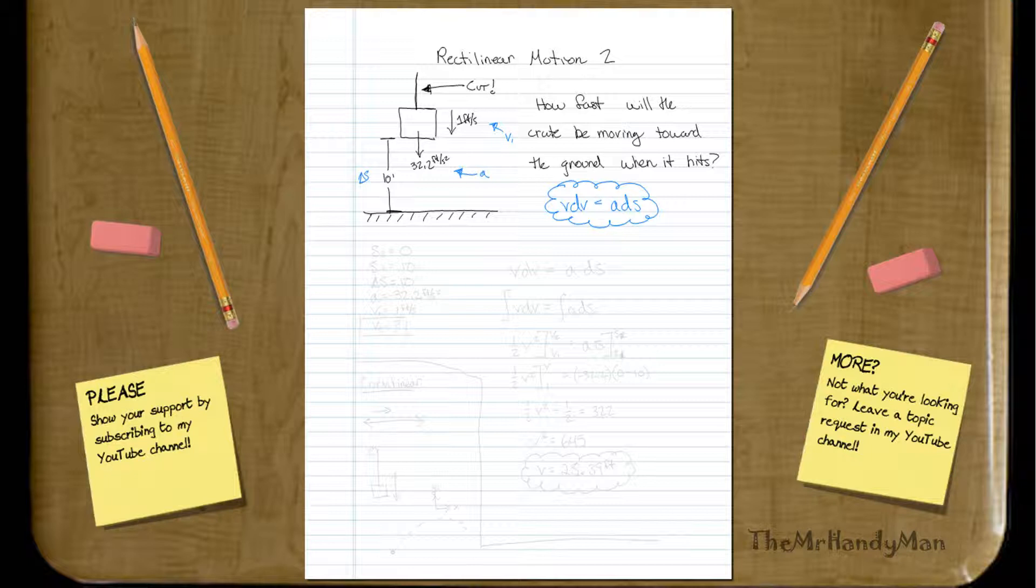So first of all, let's just calculate this out. We have s, what I'm going to call s1, or we could just call it delta s. It doesn't really matter. So we have s2 is equal to 10 feet or 0 feet, s1 is equal to 10 feet. Then basically delta s is equal to 10 feet, that's all we need to know.